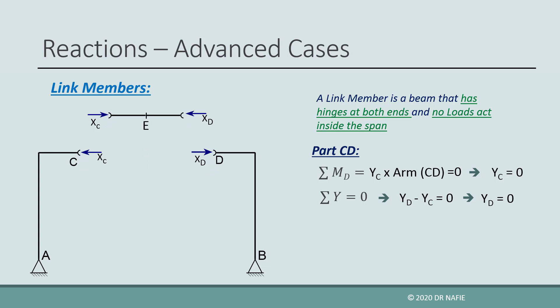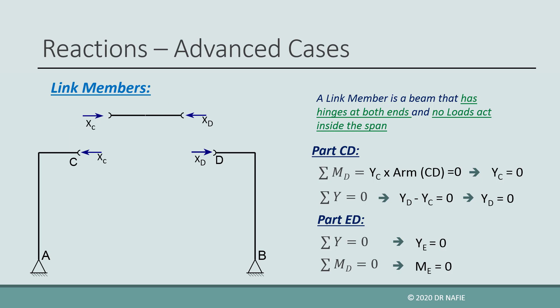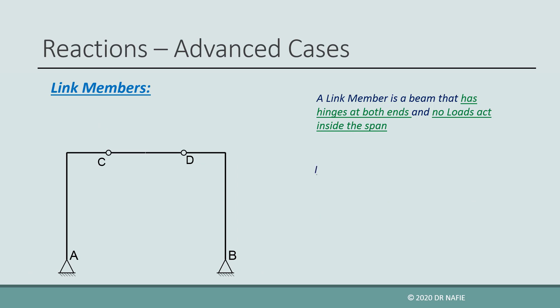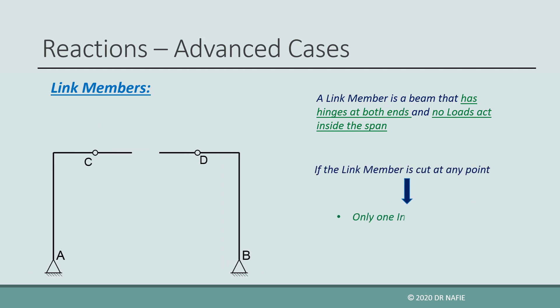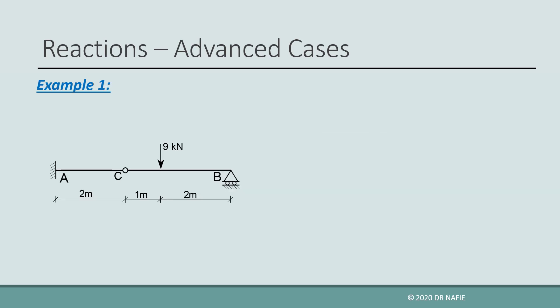If we further cut the link into two pieces at point E, two internal forces and one internal moment will appear at each side of E, because E is not a hinge. If we consider the equilibrium of part ED by applying sigma Y equals zero and taking the sum of moments about point D, we find that both YE and ME should be equal to zero, leaving only one internal force XE in the direction of the link. In summary, if a link member is cut at any point inside its span, this point will only have one internal force in the direction of the member. This provides us with two additional equilibrium equations, because both the internal moment and the perpendicular internal force vanish inside the link.